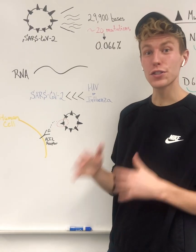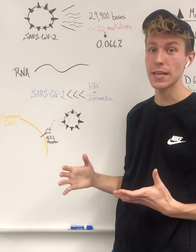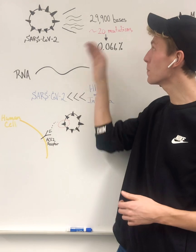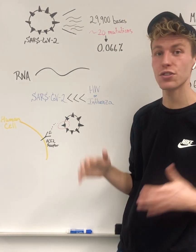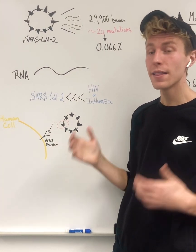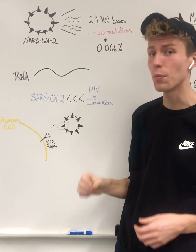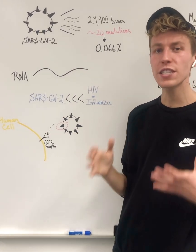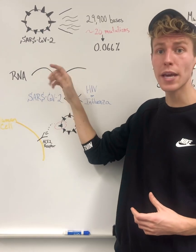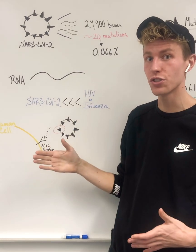The genetic material for SARS-CoV-2 is comprised of almost 30,000 bases, or units, and of those bases, there have been approximately 20 different mutations that have occurred since its sequencing back in February. This means that SARS-CoV-2 has mutated less than 0.1%. These mutations have primarily arisen because SARS-CoV-2 carries its genetic material on RNA, which is highly susceptible to mutations.